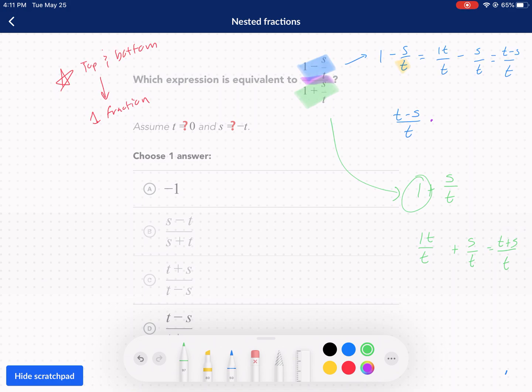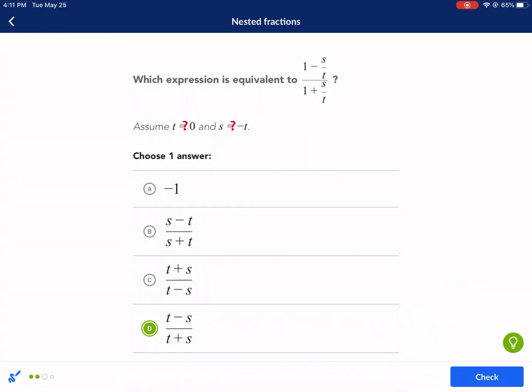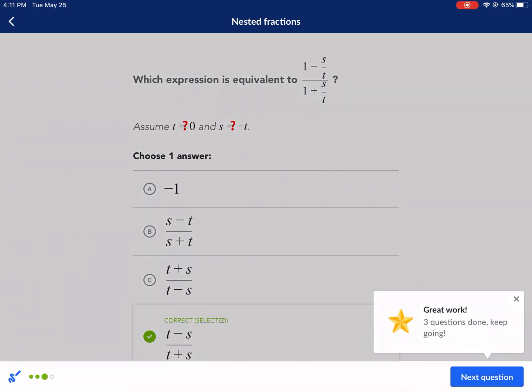So, that is my new fraction. t plus s over t. Now, I'm flipping it. This is my flip section. So, I'm going to change it to t over t plus s. Now, I can cross cancel here. I'm going to cross cancel the t. I have t minus s in the top and t plus s in the bottom. And that's my final answer. t minus s over t plus s. Wow, it's d again. Next question.